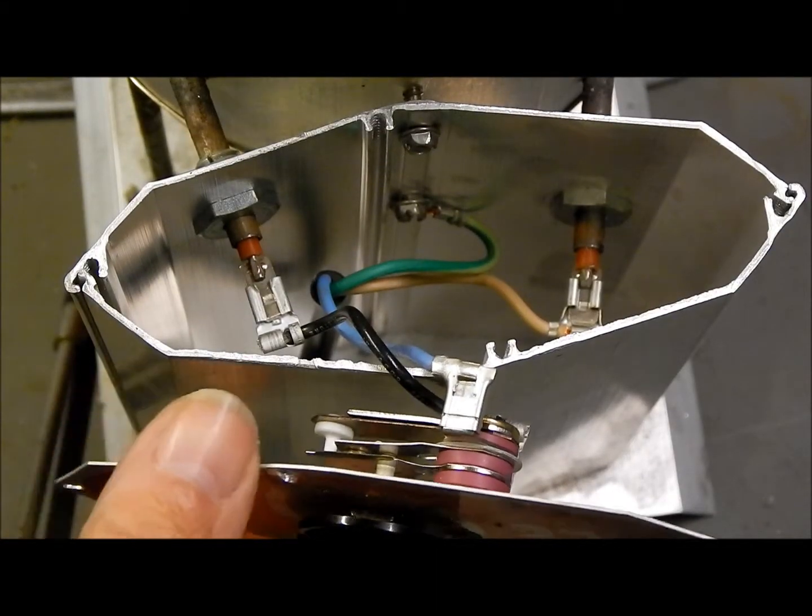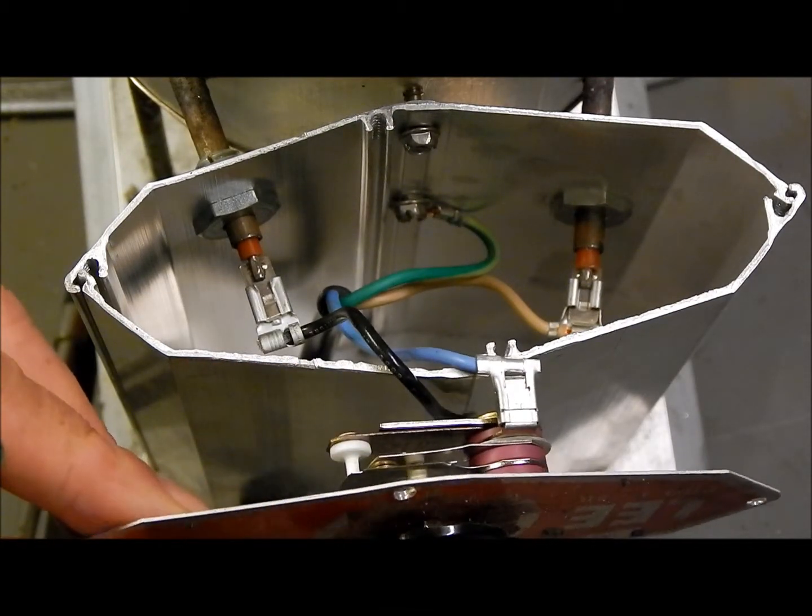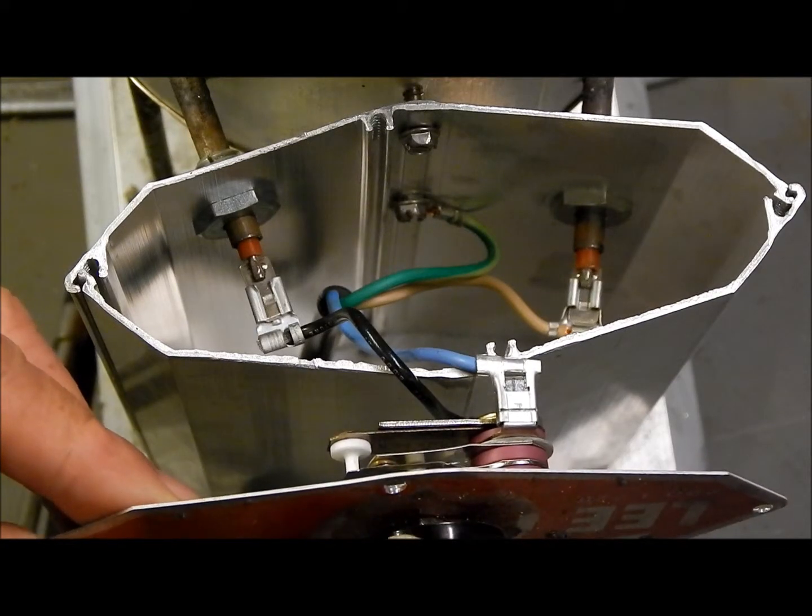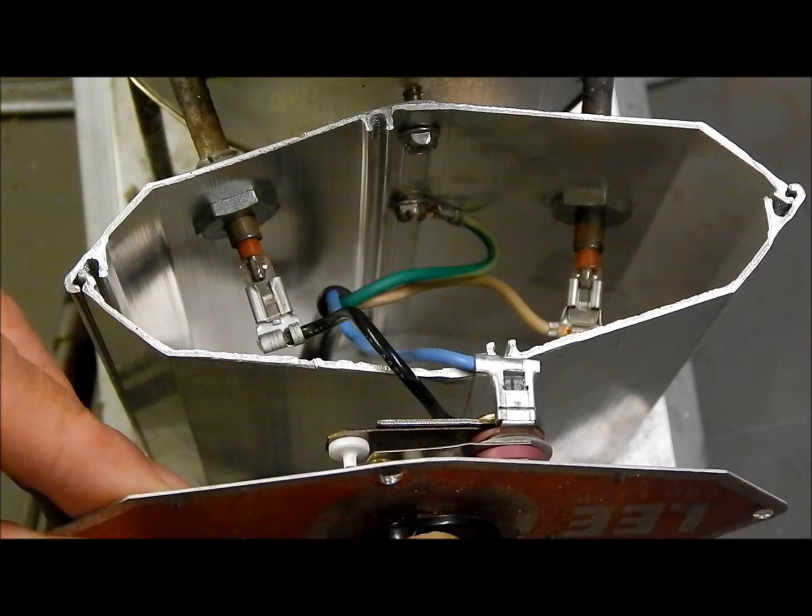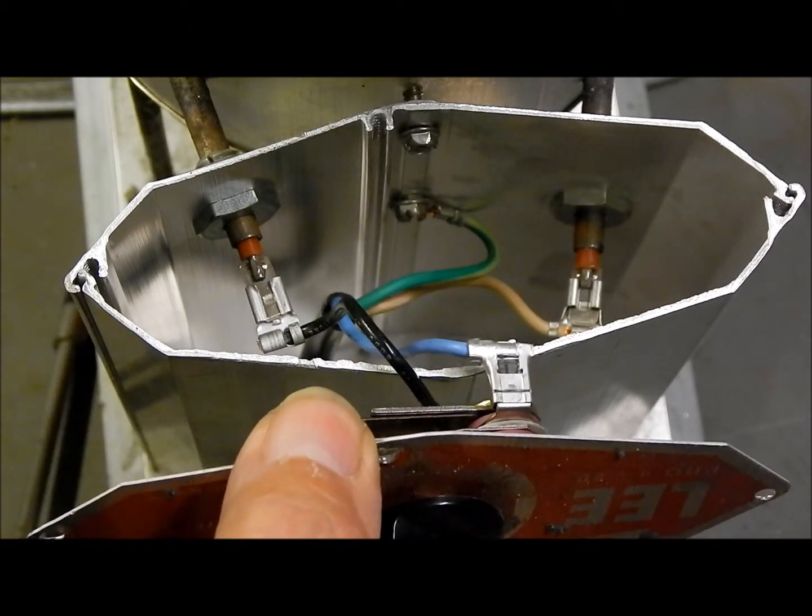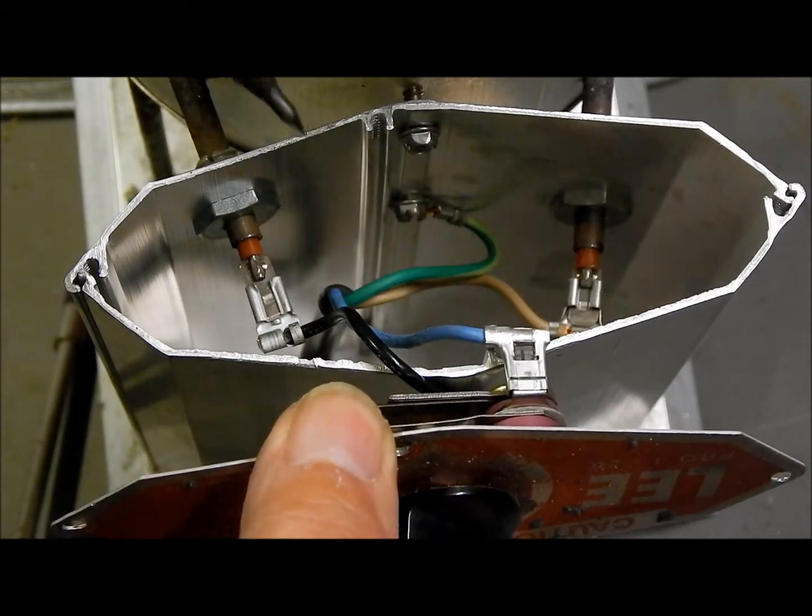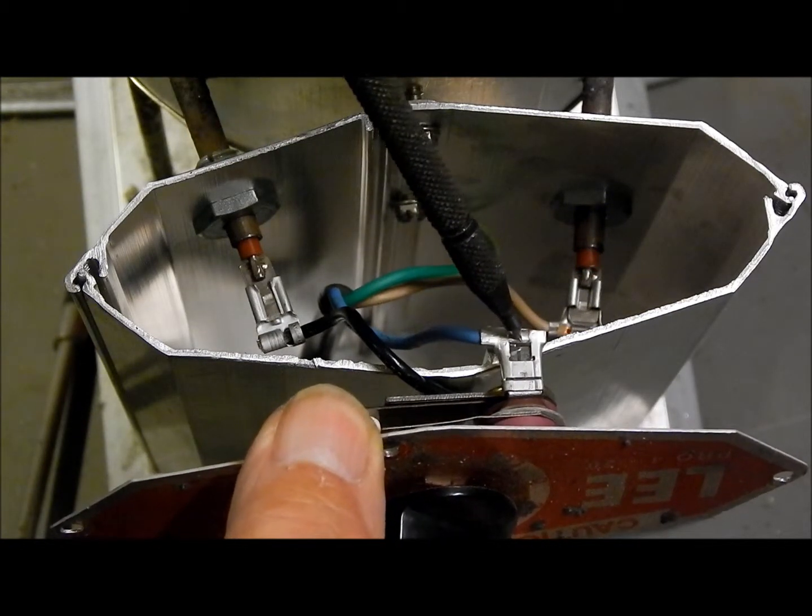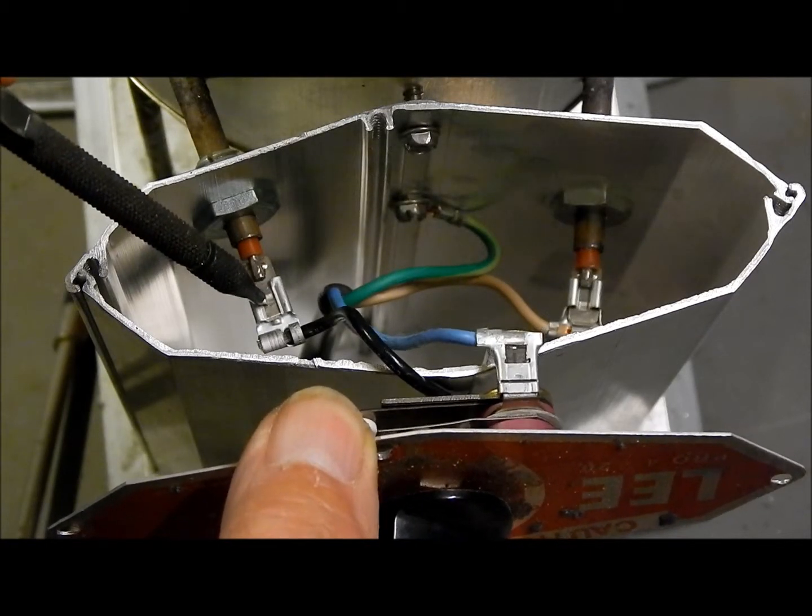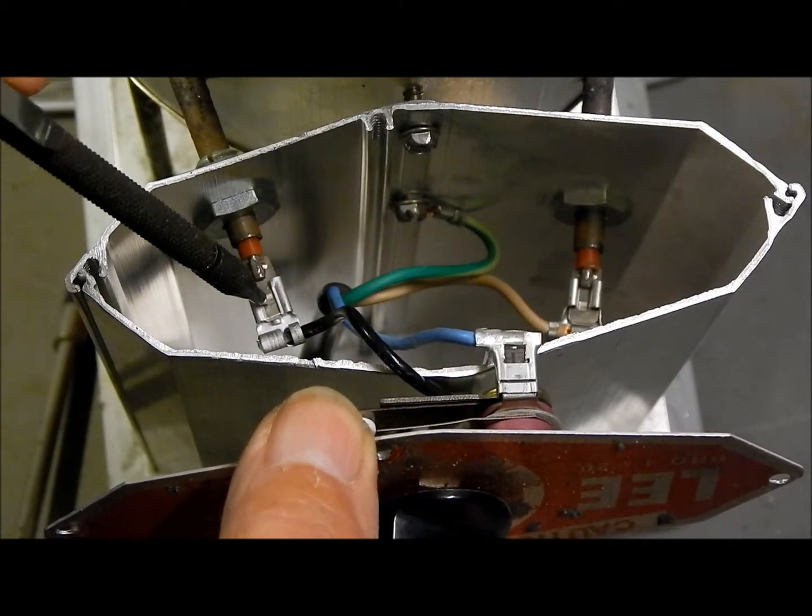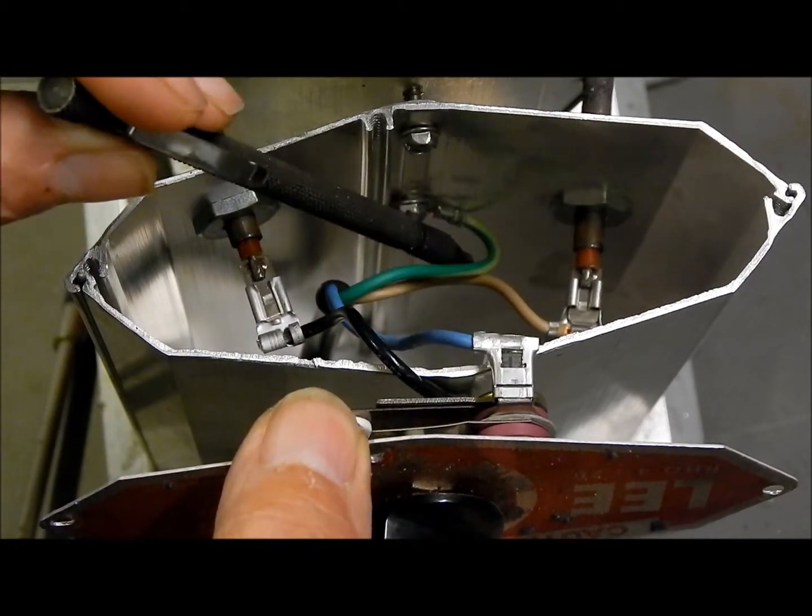So here are the internals exposed for all to see. The controller is a very simple bimetallic thermostat. It's surprising that it works as well as it does considering where it's positioned. Anyway all we need to do to bypass it to fit our controller is to take the live lead from here, unclip it and put it directly onto the input to the heating coil. We can leave the neutral and the earth leads alone.